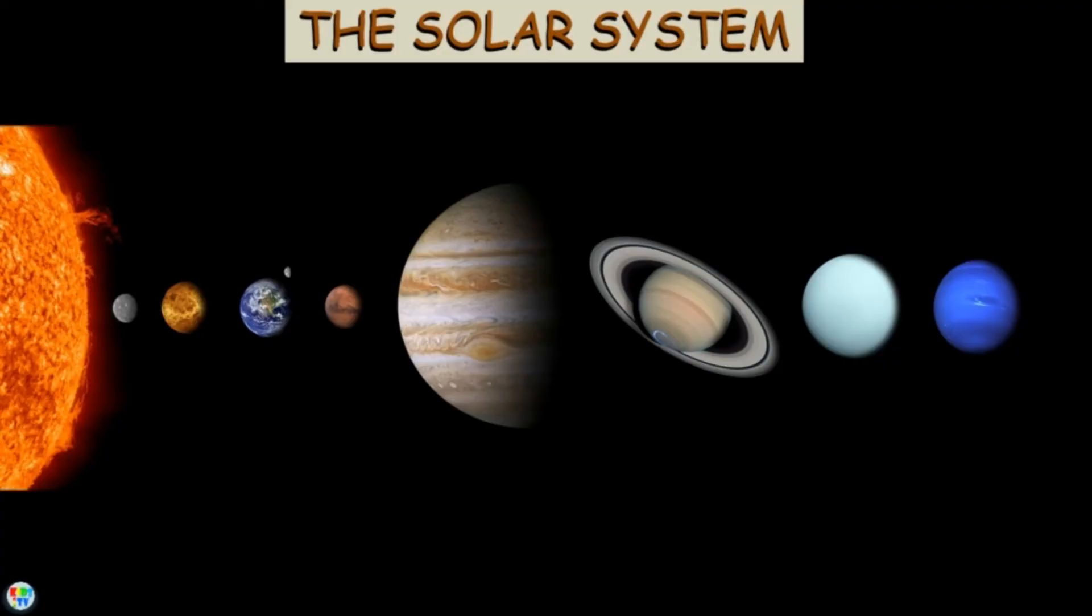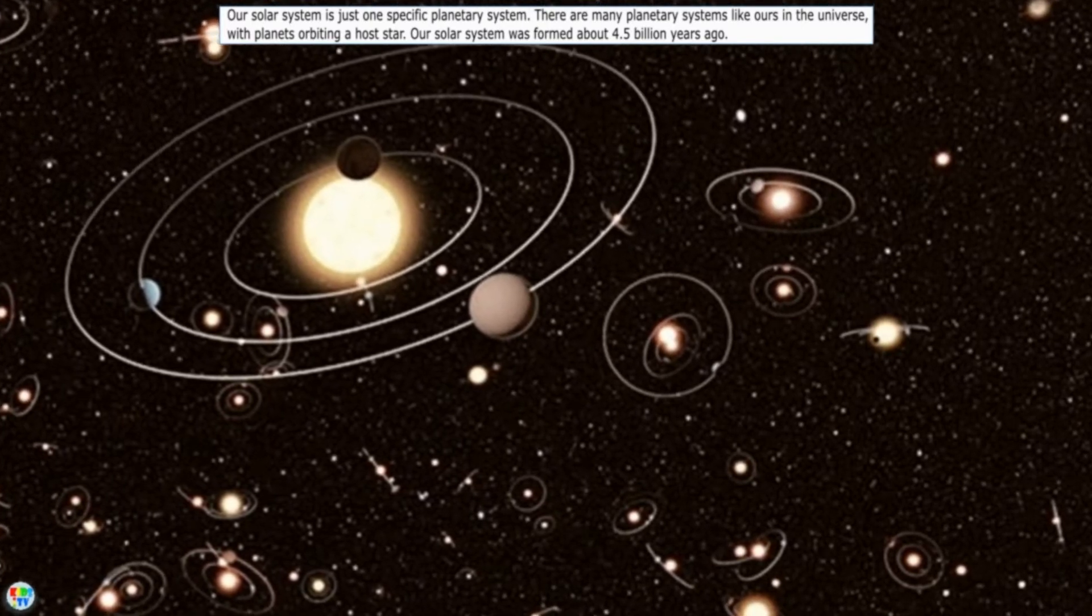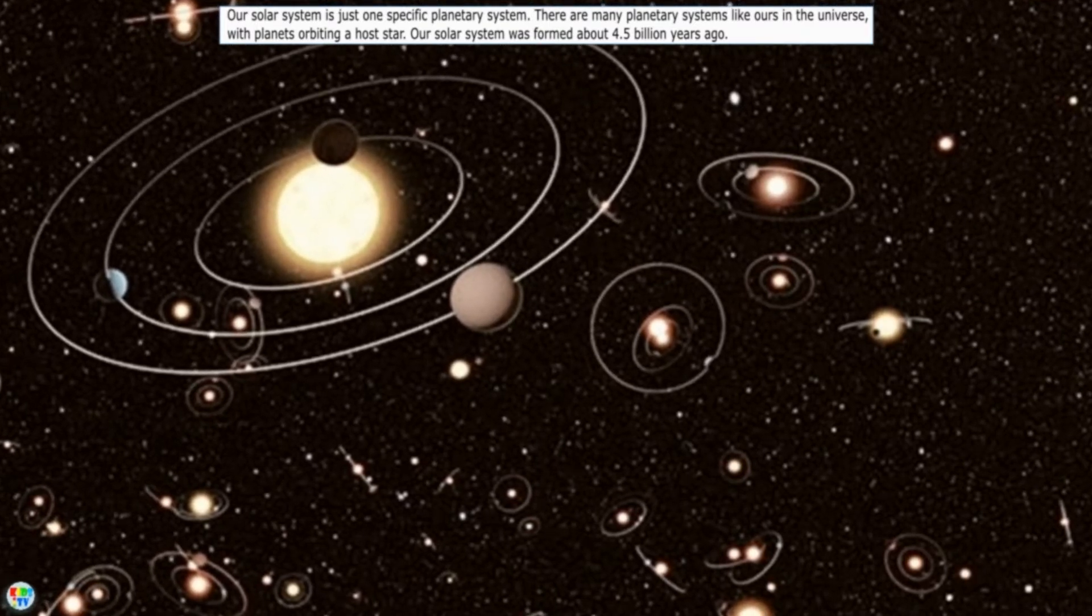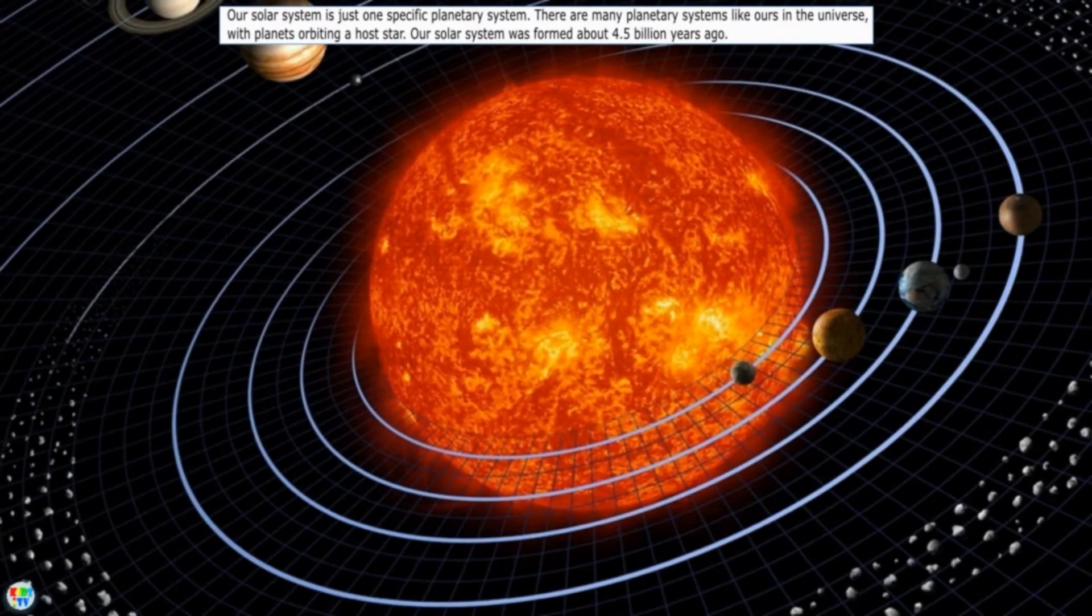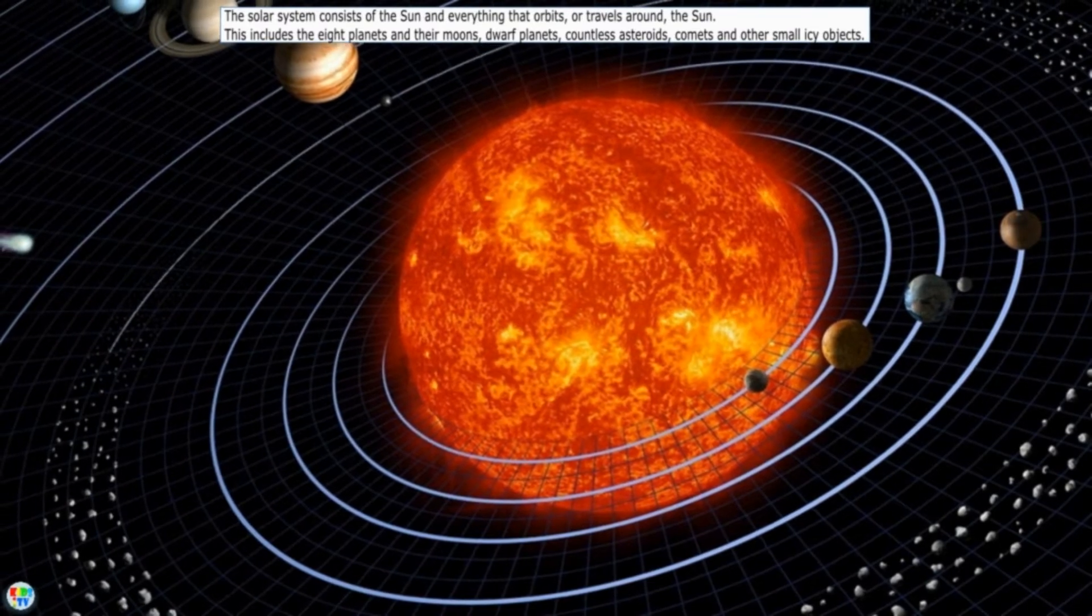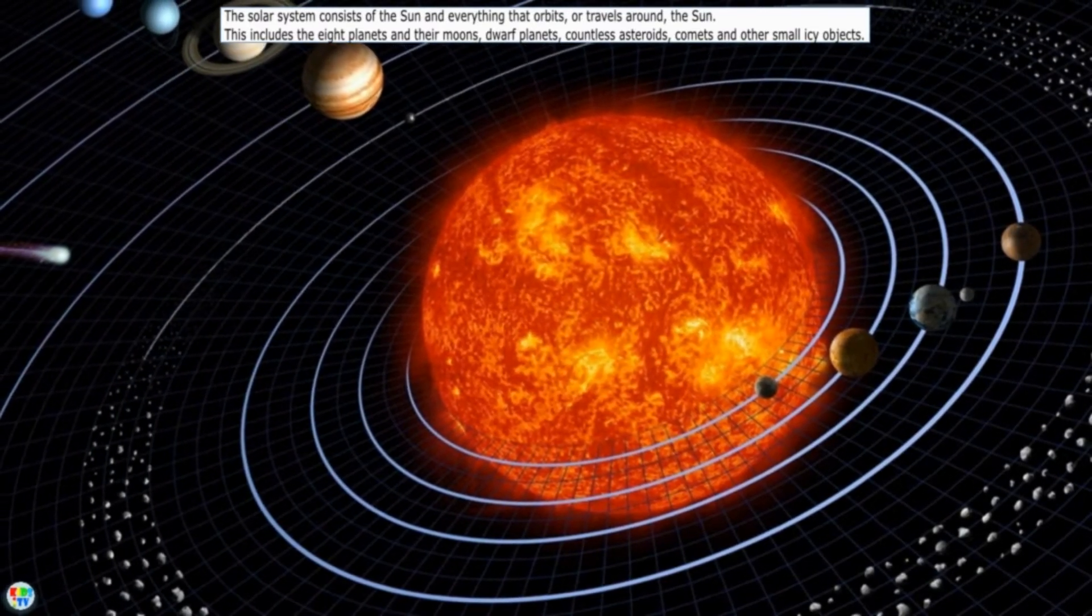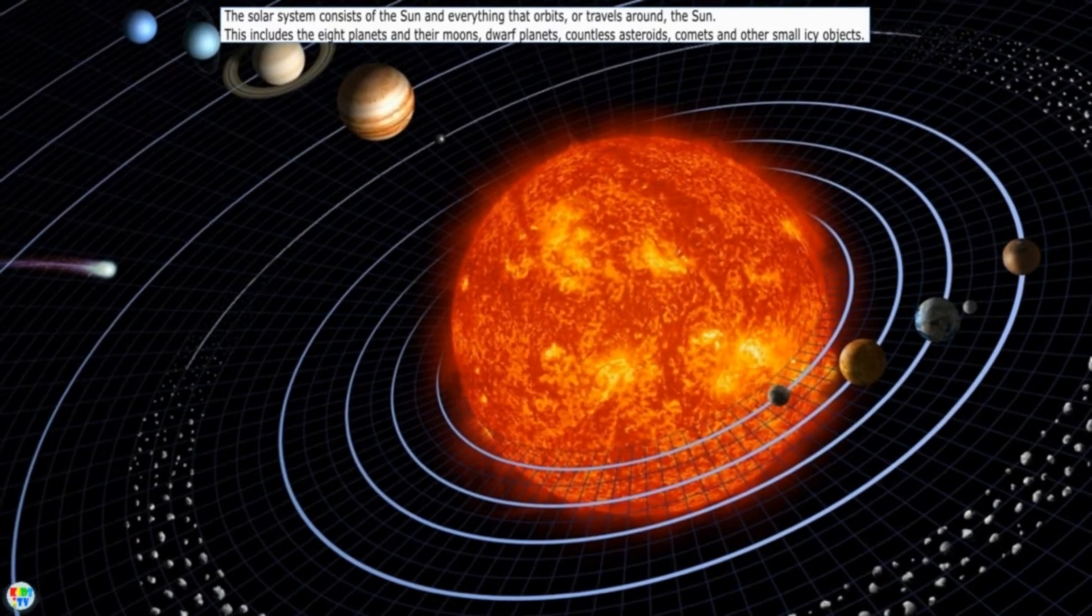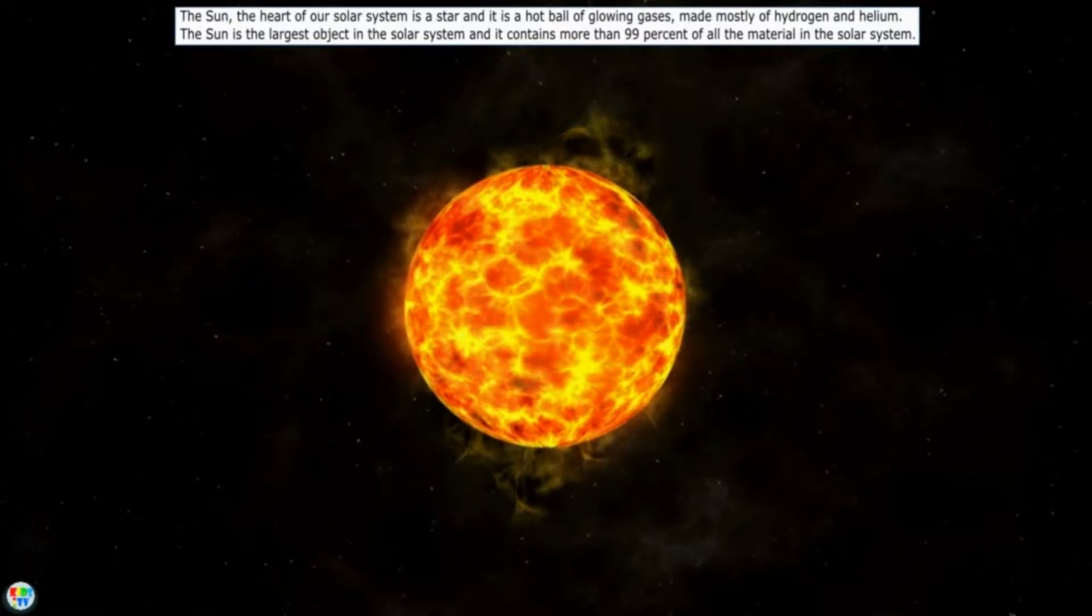The Solar System. Our solar system is just one specific planetary system. There are many planetary systems like ours in the universe with planets orbiting a host star. Our solar system was formed about 4.5 billion years ago. The solar system consists of the sun and everything that orbits or travels around the sun. This includes the eight planets and their moons, dwarf planets, countless asteroids, comets, and other small icy objects.